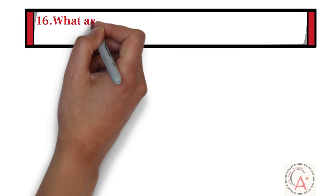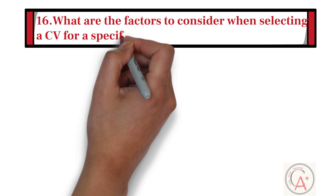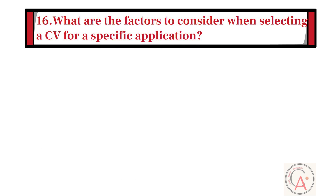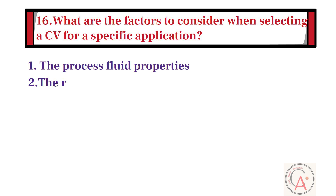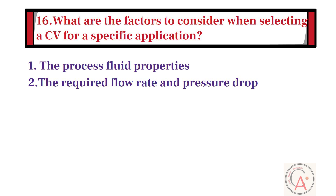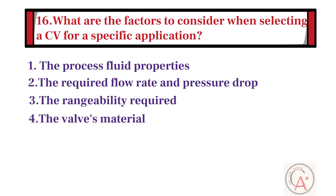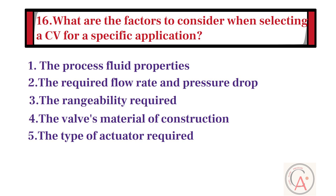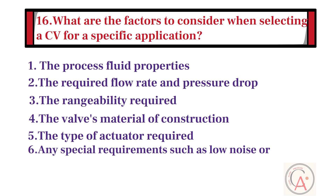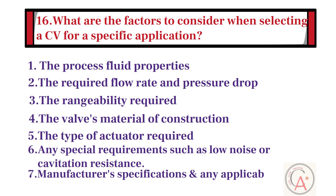What are the factors to consider when selecting a control valve for a specific application? Factors to consider include: process fluid properties, required flow rate and pressure drop, rangeability required, the valve's material of construction, type of actuator required, any special requirements such as low noise or cavitation resistance, and the manufacturer's specifications and any applicable industry standards.